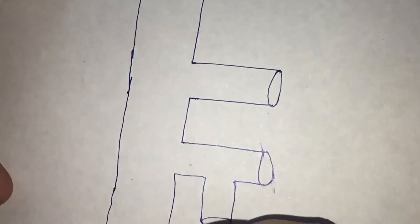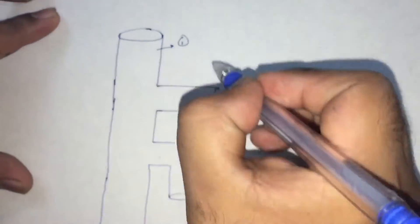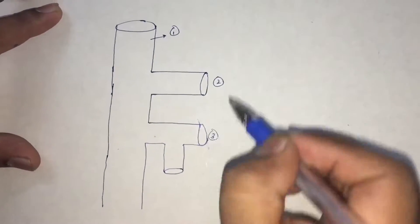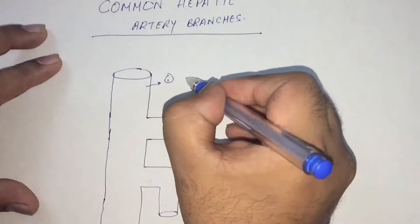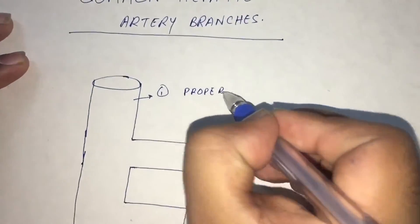The common hepatic artery proceeds in the liver as proper hepatic artery. So these are three main branches coming from the common hepatic artery.